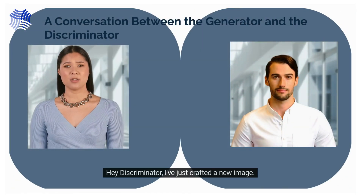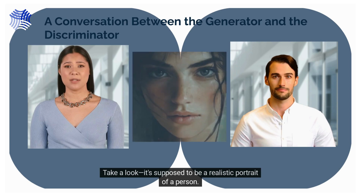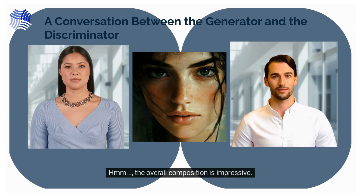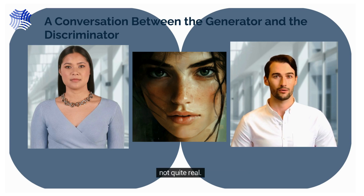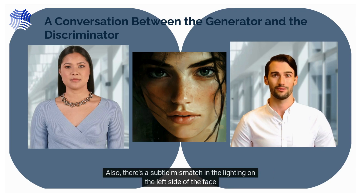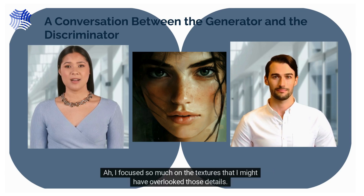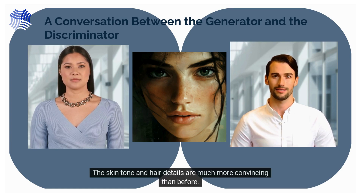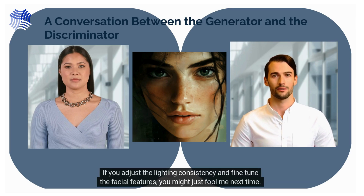Generator: 'Hey discriminator, I've just crafted a new image. Take a look — it's supposed to be a realistic portrait of a person. What do you think?' Discriminator: 'The overall composition is impressive, and the textures and shading are much improved, but there's something about it that feels not quite real. The eyes are a bit asymmetrical, and the background seems slightly blurred compared to the subject. Also, there's a subtle mismatch in the lighting on the left side of the face.' Generator: 'I focused so much on the textures that I might have overlooked those details.' Discriminator: 'You're getting closer, though. The skin tone and hair details are much more convincing than before. If you adjust the lighting consistency and fine-tune the facial features, you might just fool me next time.'